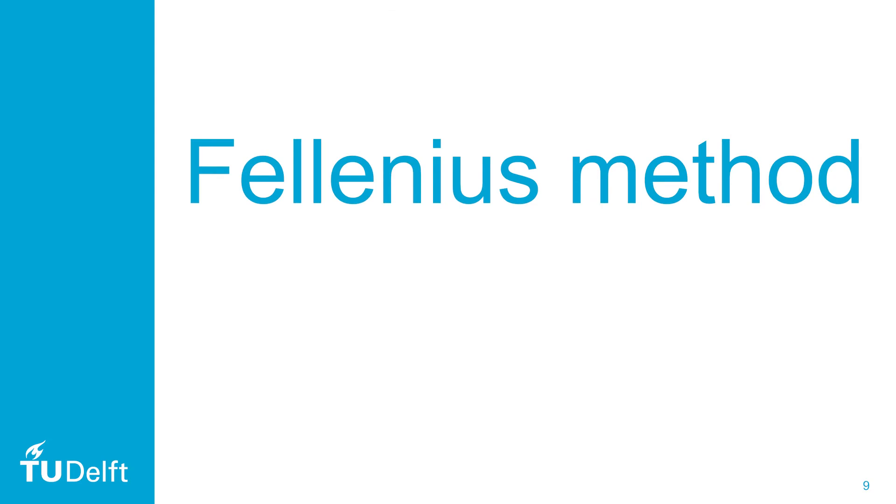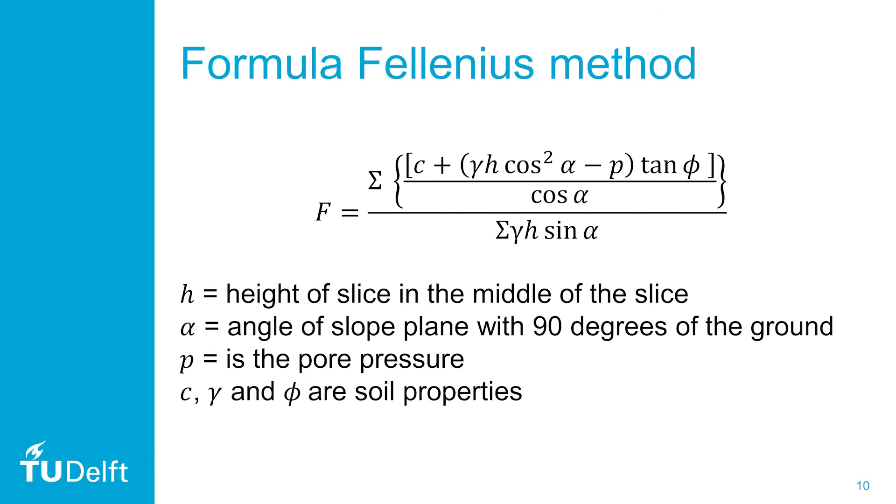Now we will start with the explanation of the Fellenius method. On this slide, the formula of the Fellenius method is shown. C, gamma, and phi are soil properties and are therefore usually given in an exercise. P is the pore pressure, which is not relevant in this question, as the water table is far below the ground surface. What remains are alpha and h, which we calculated before.